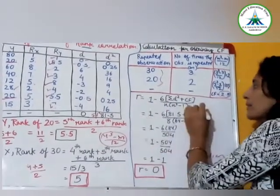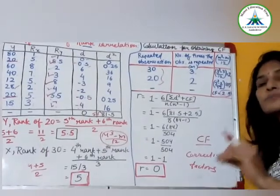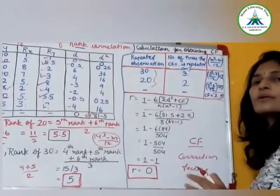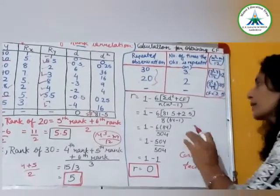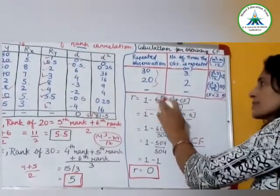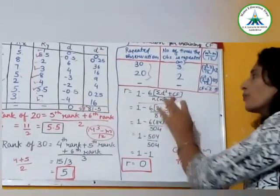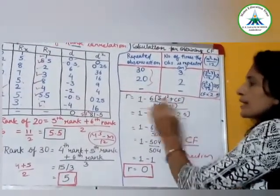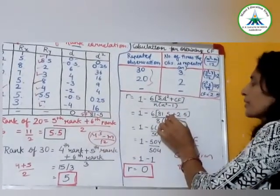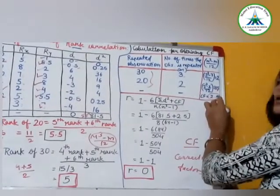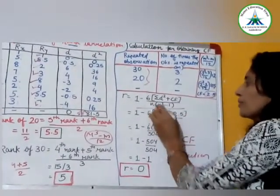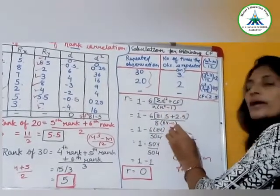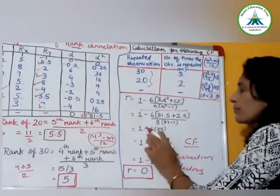Formula: 1 minus 6 times sigma d square plus CF upon n bracket n square minus 1. So 1 minus 6, now sigma d square is 81.5 plus CF 2.5 upon n, number of observations is 8. Then n square, 8 square is 64 minus 1. So 1 minus 6 times 81.5 plus 2.5 is 84 upon 63 into 8, so 504.